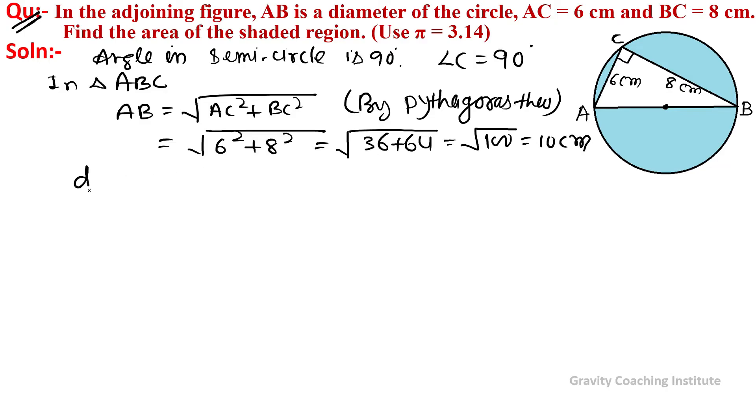So the diameter of the circle equals 10 cm, so radius = d/2 = 10/2 = 5 cm.